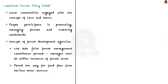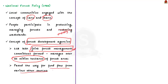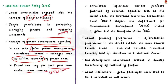Let us see some provisions from the National Forest Policy 1988. Through this policy, local communities are engaged with the concept of care and share — people participate in protecting and managing forests and mending wasteland. To make this participatory approach operative, the concept of Forest Development Agencies was introduced. This resulted in the formation of nearly 1.18 lakh Joint Forest Management Committees which managed over 25 million hectares of forest area, and paved the way for fund flow from sources like the World Bank.